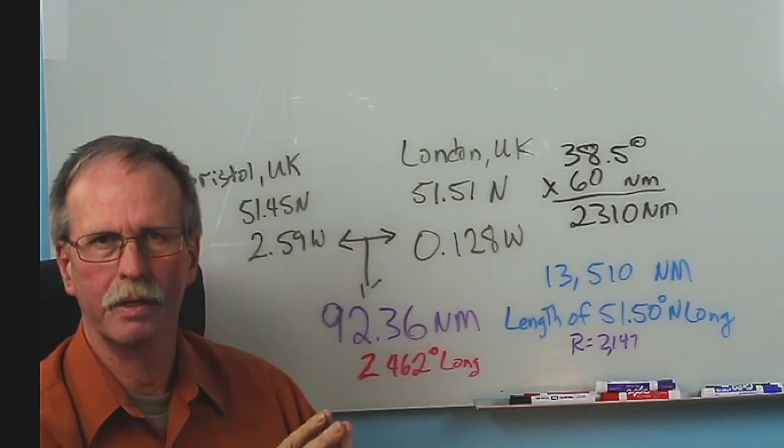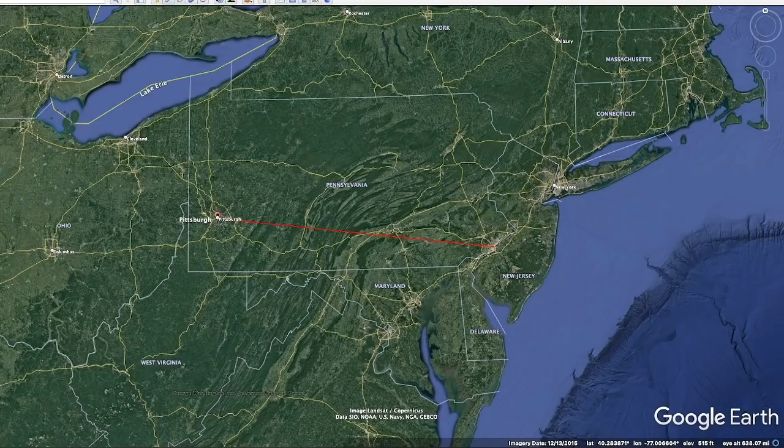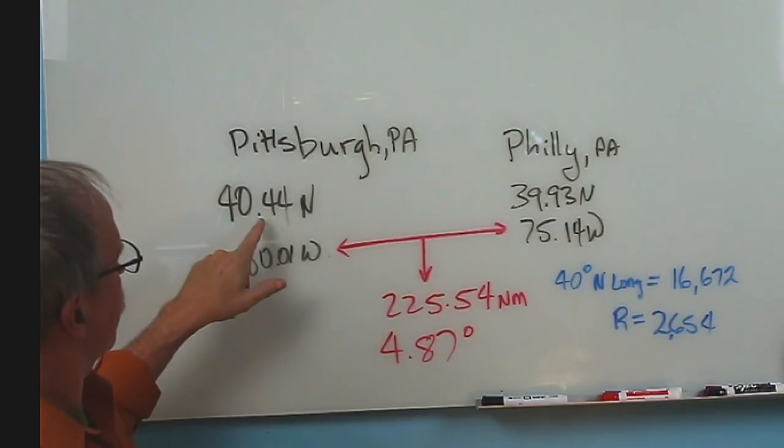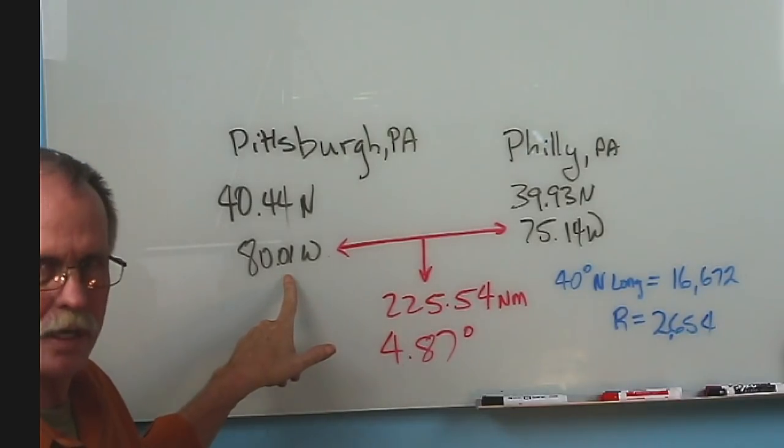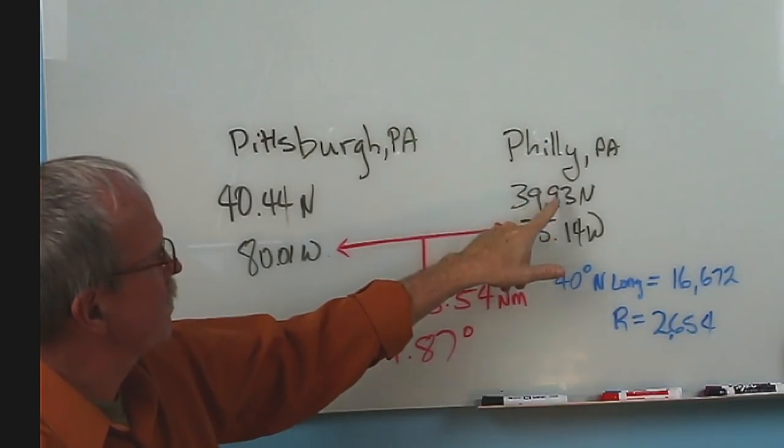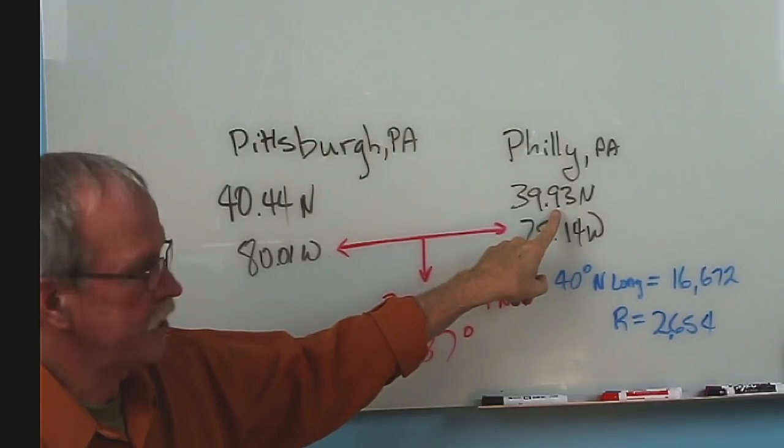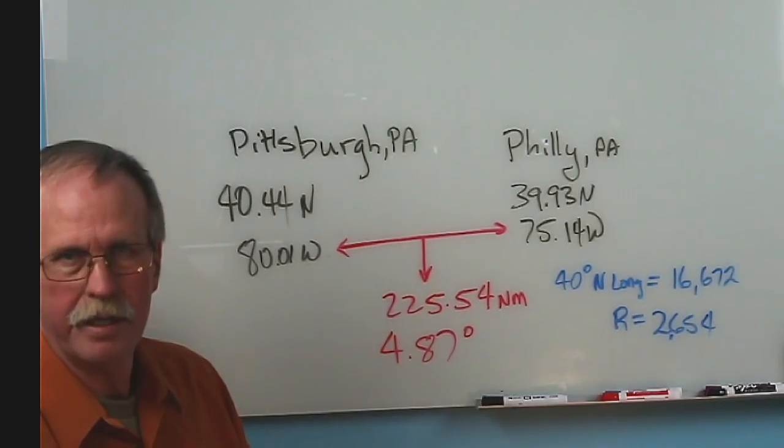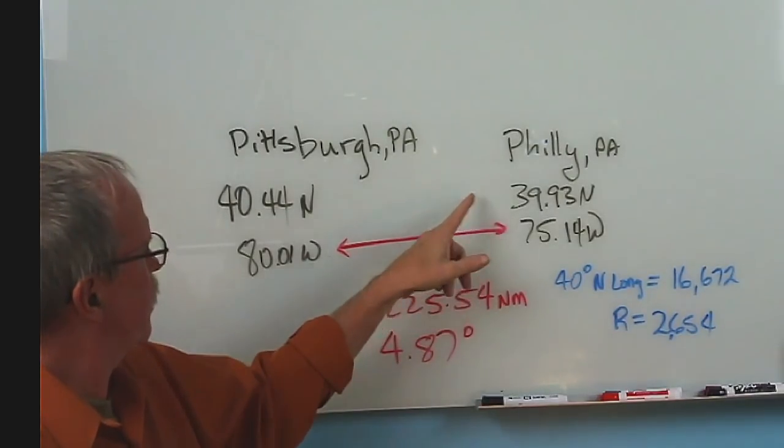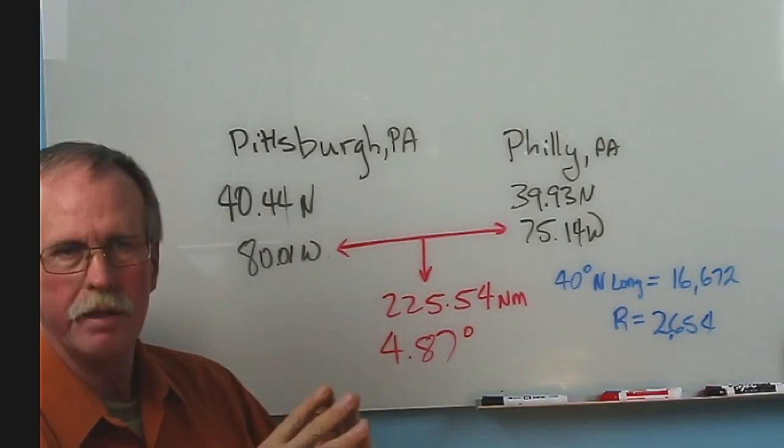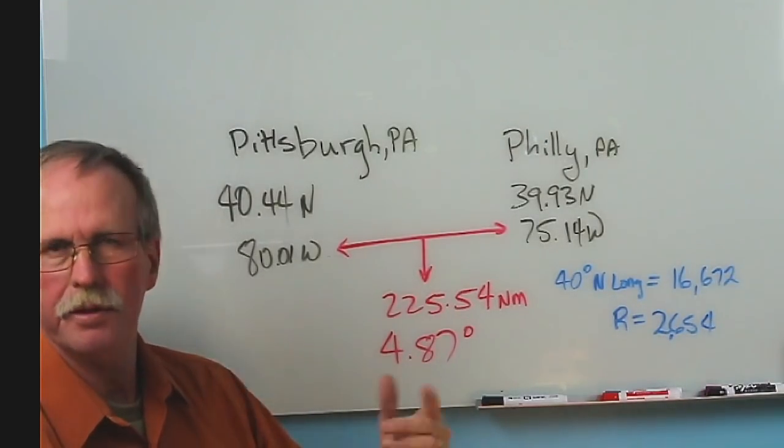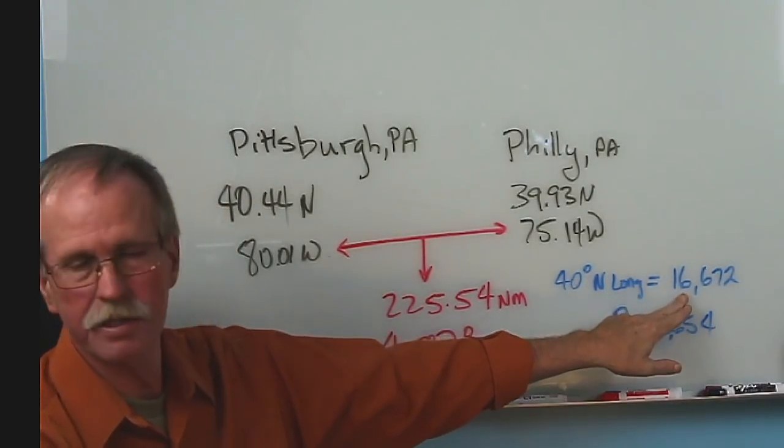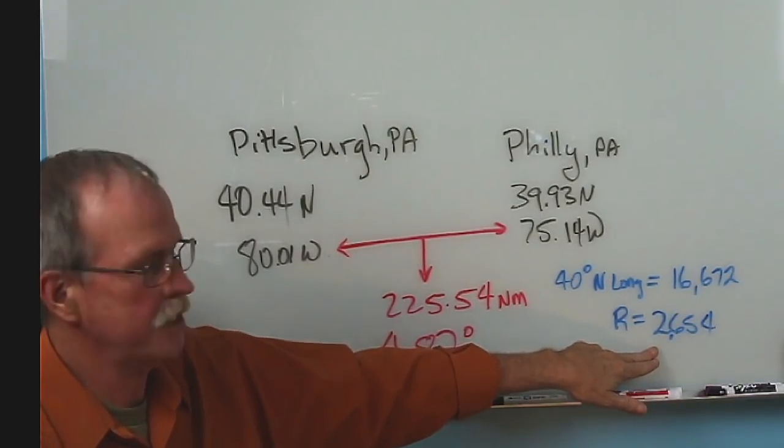But maybe this is an anomaly. Let's look at another part of the world. Hey, John. This one's for you. How about Pittsburgh, Pennsylvania to Philadelphia, Pennsylvania? All right. Pittsburgh, 40.44 degrees north, 80.01 degrees west. Philadelphia, Pennsylvania, 39.93 degrees north, 75.14 degrees west. Difference between the two, 4.87 degrees. Now there's a very slight difference in the latitude, but I think you'll agree that half a degree isn't going to make that much of a difference. So let's take 40 degrees north latitude. Well, the length of that entire latitude around the North Pole would be 16,672 nautical miles. That gives it a radius of 2653.